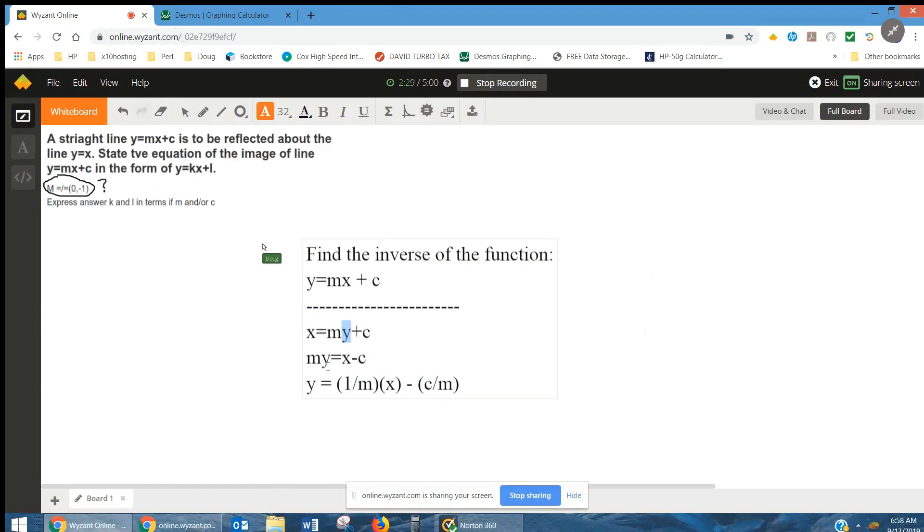Then, divide every term by m on the right side. And, you get 1 over m times x minus c over m. And, so, this is your value of k, and this is your value of l minus c over m. Okay, there you go.